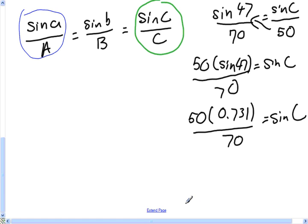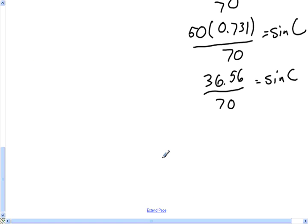So 0.731 times 50 is 36.56 divided by 70. Equals 0.522 is equal to Sign C.